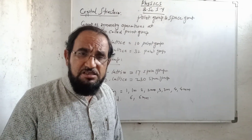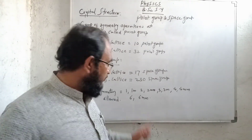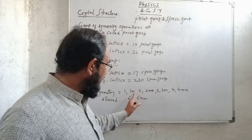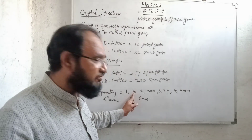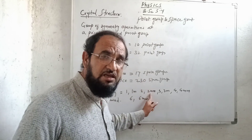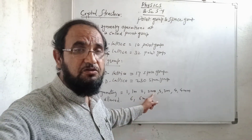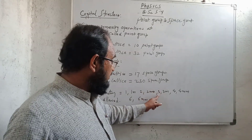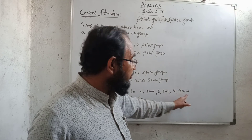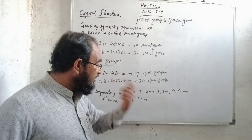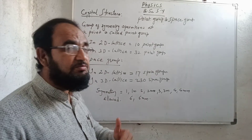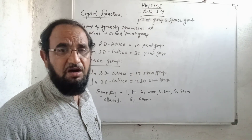The symmetry operations may be: 1, 1M, 2, 2MM — where 1M means mirror reflection, and 2MM means first a mirror reflection and second perpendicular to the first axis — then 3, 3M (mirror reflection), 4, 4MM. Note that 5 is not allowed. Then 6 and 6MM. These are the allowed symmetry operations which we can perform about a point.